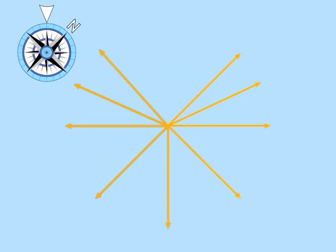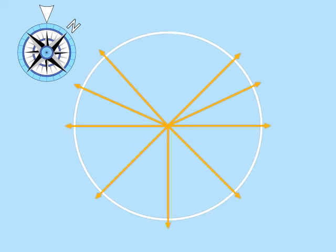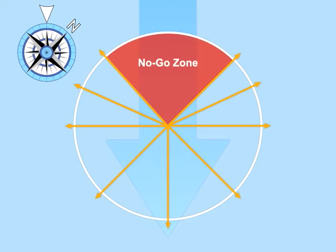A sailboat can sail in nearly any direction, except inside the no-go zone, directly into the wind. If you think of this as a circle, with the wind coming from the top of that circle, we cannot sail directly into the top quarter of that circle.